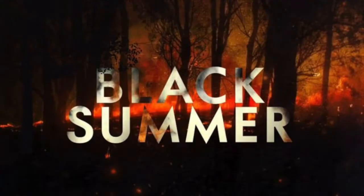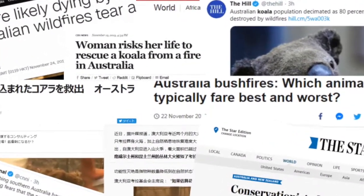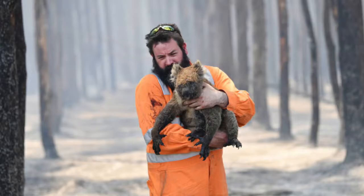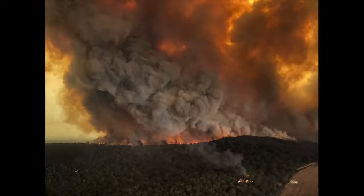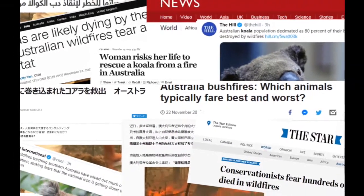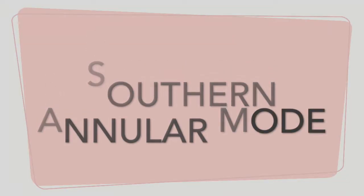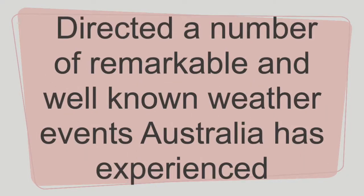Australia's black summer bushfires made international headlines. The devastating impact on wildlife habitats, homes, and human lives were broadcasted throughout the world. But something that's not so well known is the Southern Annular Mode, which has directed a number of remarkable and well-known weather events Australia has experienced. It is often simply referred to as the SAM.